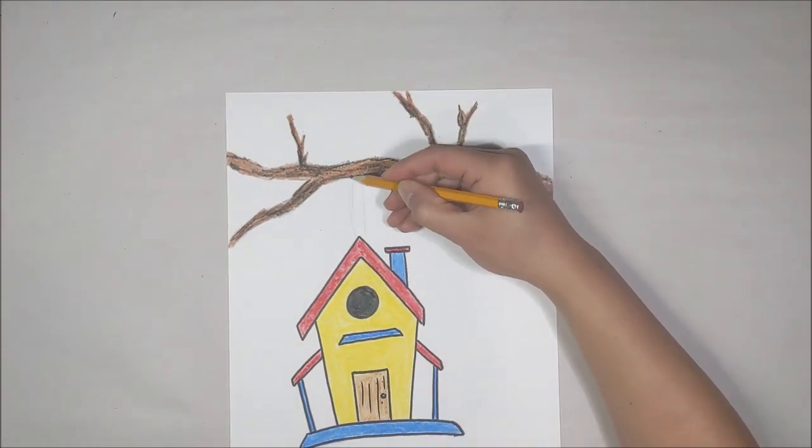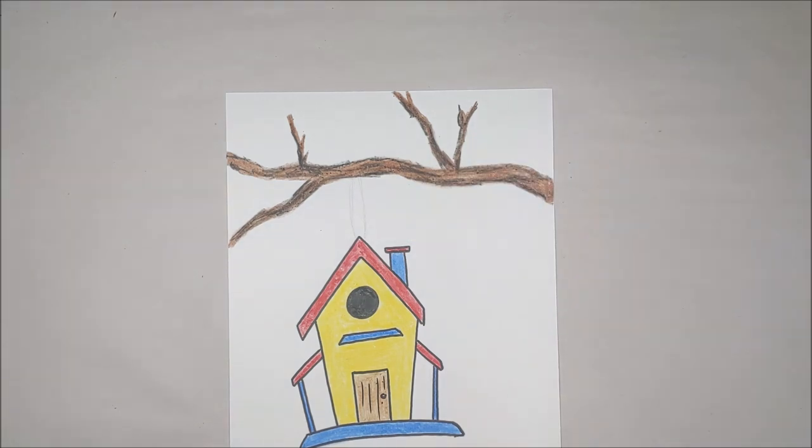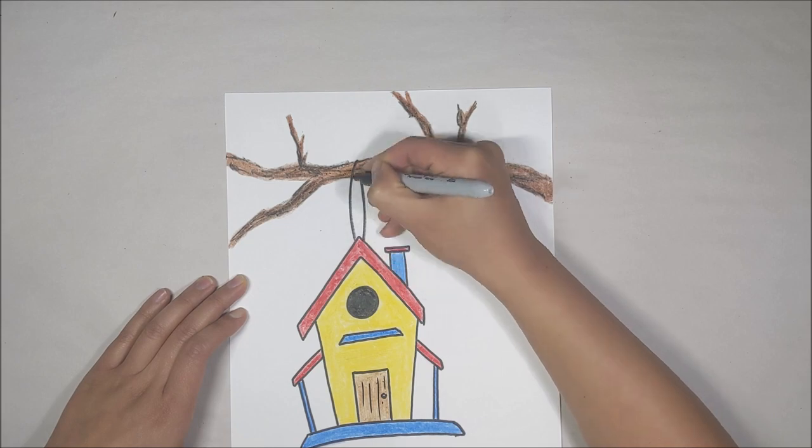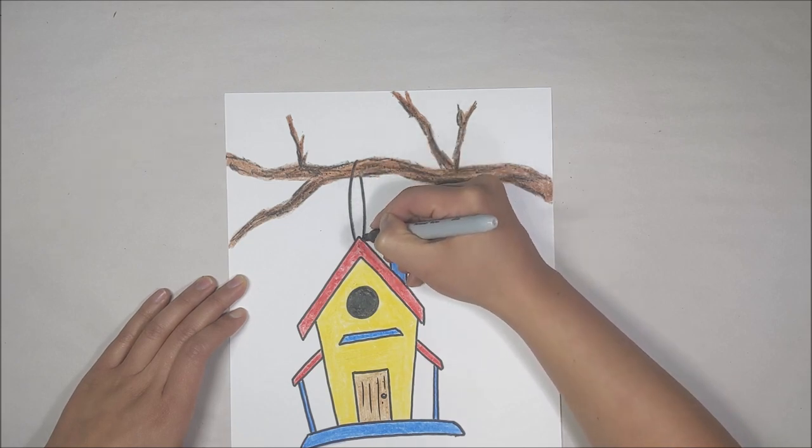To connect the bird house and the branch, draw in the string. I'm using my pencil first and then give it a nice black outline with marker.